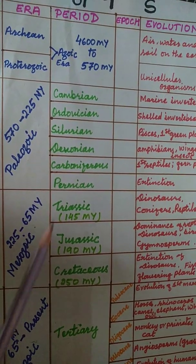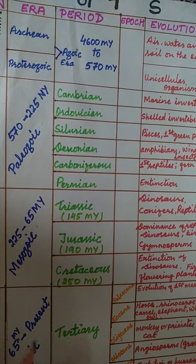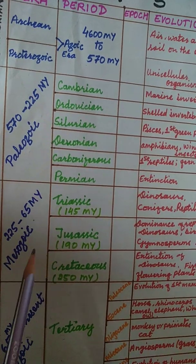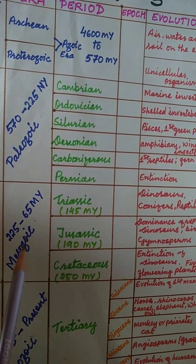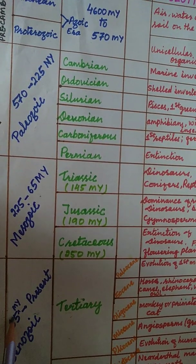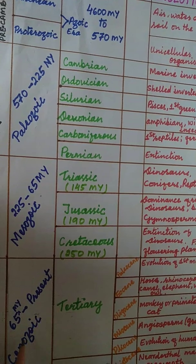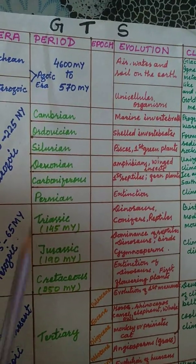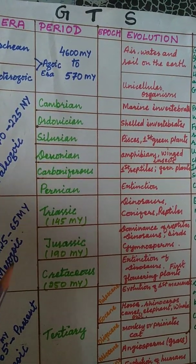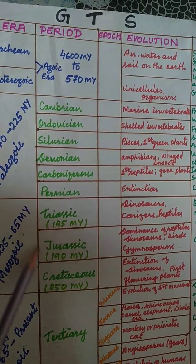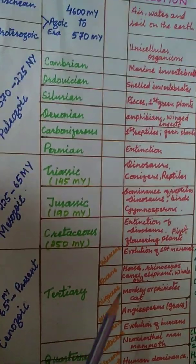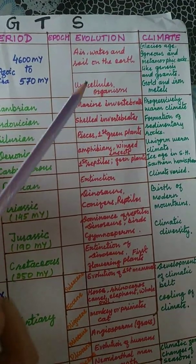The time periods for each era are: Paleozoic — 570 to 225 million years ago; Mesozoic — 225 to 65 million years ago; and Cenozoic — 65 million years ago to the present. Mesozoic is divided into Triassic, Jurassic, and Cretaceous periods. Under Cenozoic are Tertiary and Quaternary, which are further divided into epochs. There is also a column for evolution of plants and animals (flora and fauna) and climatic changes.